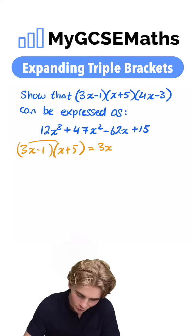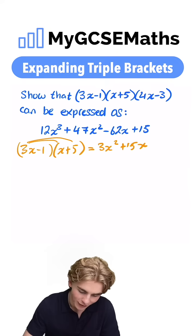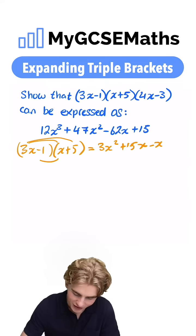3x times by x is 3x squared. Our outer 3x times by 5 is 15x. Next, our inner minus 1 times by x, we're gonna have minus x. Our last minus 1 times by 5, we're gonna have minus 5.